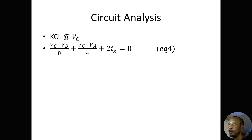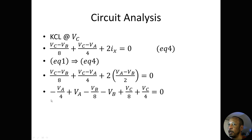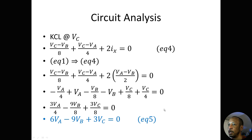KCL at VC gives me: VC minus VB over 8 plus VC minus VA over 4 plus 2 IX equals 0. That's equation 4. Substituting equation 1 into equation 4: VC minus VB over 8 plus VC minus VA over 4 plus 2 times VA minus VB over 2 equals 0. This simplifies to 6 VA minus 9 VB plus 3 VC equals 0. That's equation 5.